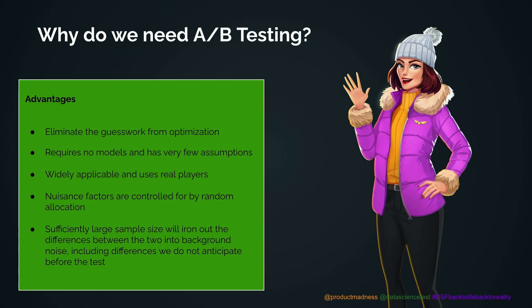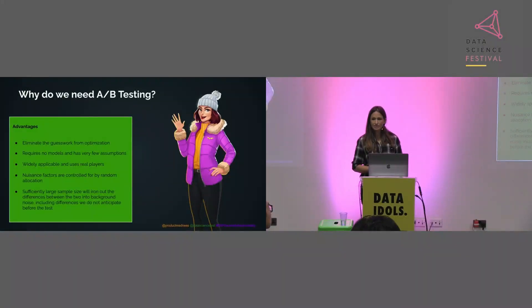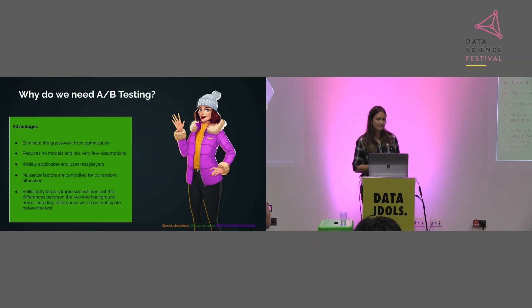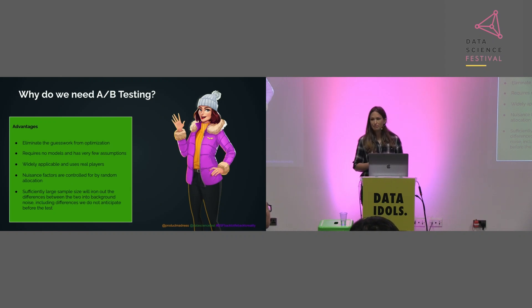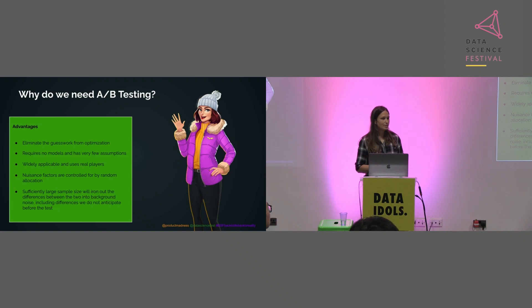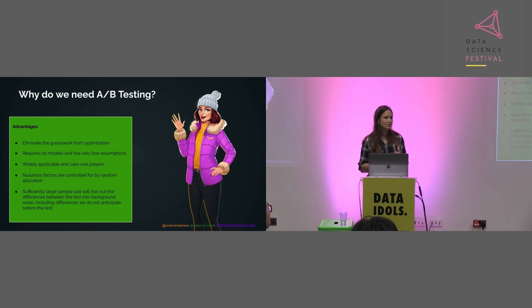There are a lot of advantages to A/B testing. It eliminates the guesswork from optimization. It doesn't require any models and has very few assumptions. It's widely applicable — we can use it on almost any example — and it uses real players, the very players we want to roll changes out to. Because we use random allocation, we take into account nuisance factors, and with sufficiently large sample sizes we can iron out differences between groups, including ones we don't anticipate or aren't even able to measure.